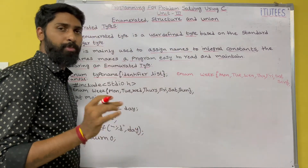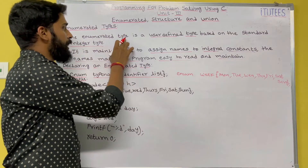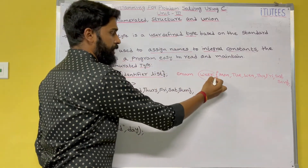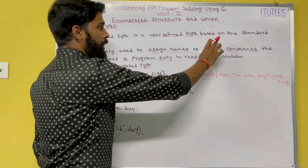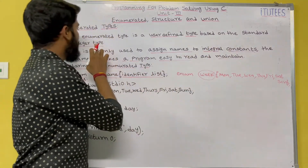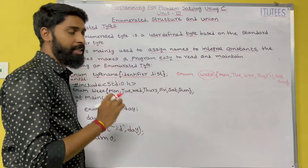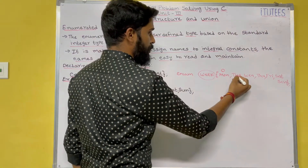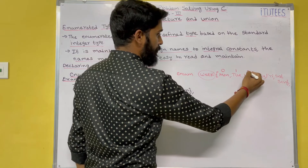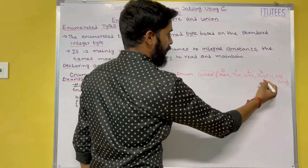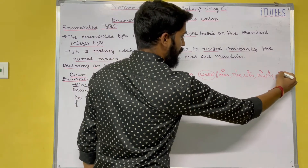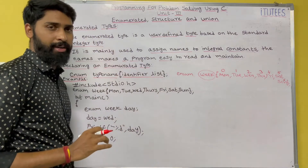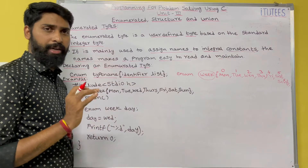So what is the enumerated data type here? The type name is 'week', based on the standard integer type. Standard integer type means Monday is indicated by zero, Tuesday by one, Wednesday by two, Thursday by three, Friday by four, Saturday by five, Sunday by six. I hope you all understand what an enumerated data type is.